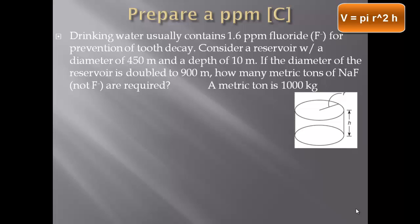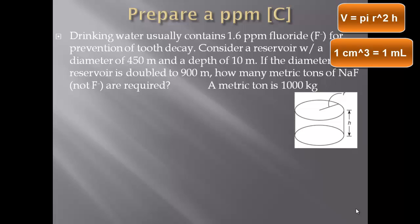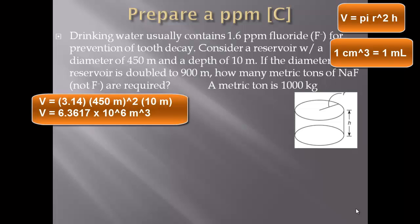If you remember from General Chemistry 1, one of the conversions you always needed to know is the one that takes you from a unit of measurement to a unit of volume: 1 centimeter cubed equals 1 milliliter. We have to take the information about the reservoir and find the volume first. The volume is π r² h. They tell us the diameter is doubled, so the radius is 450 meters. That gives us π times 450 meters squared times 10 meters, which equals 6.3617 times 10 to the 6 meters cubed.